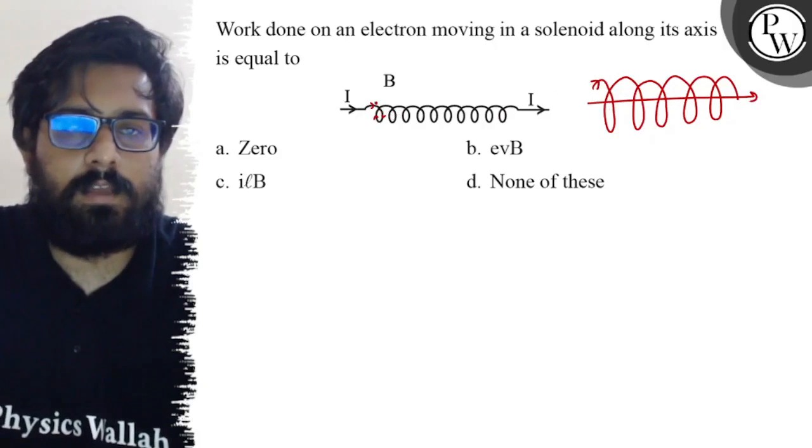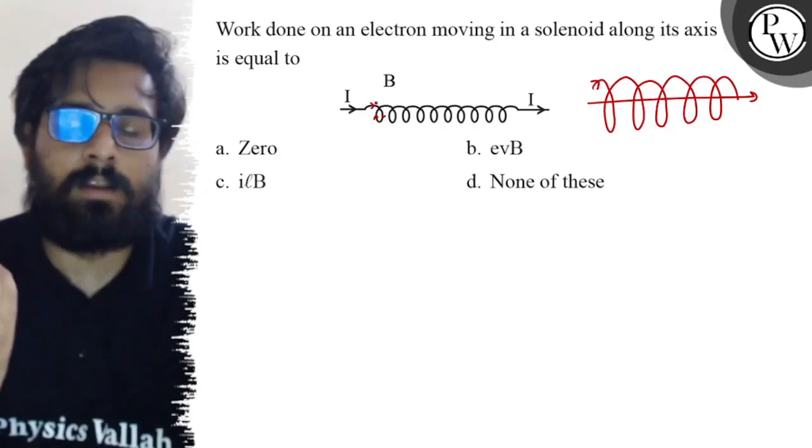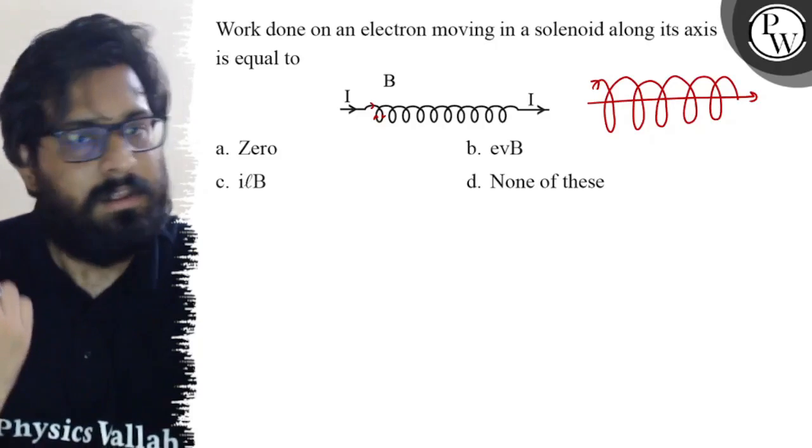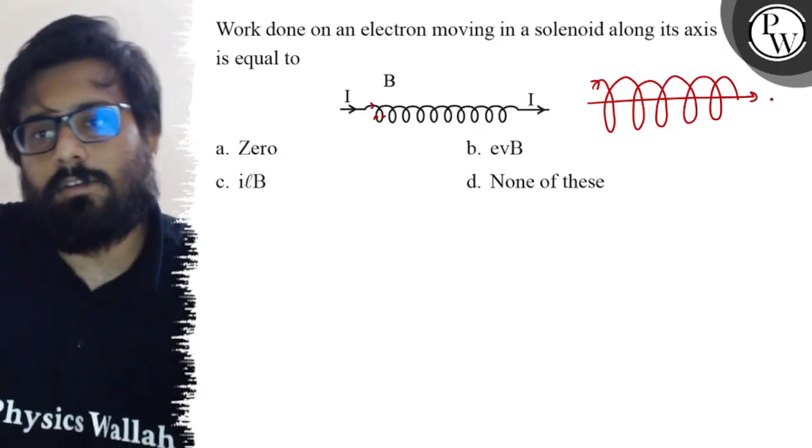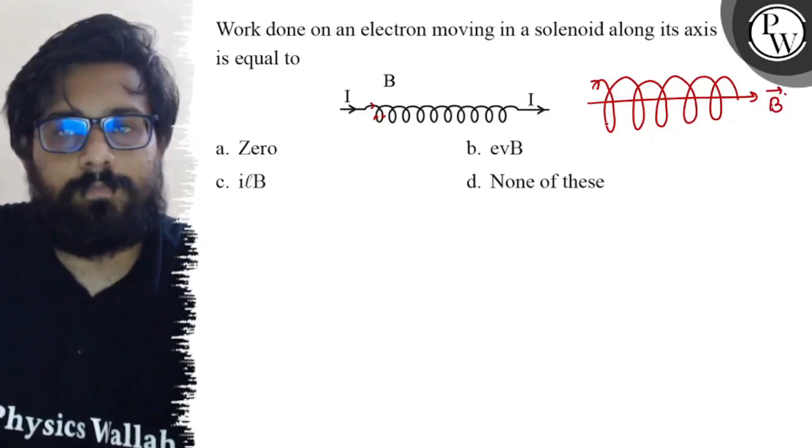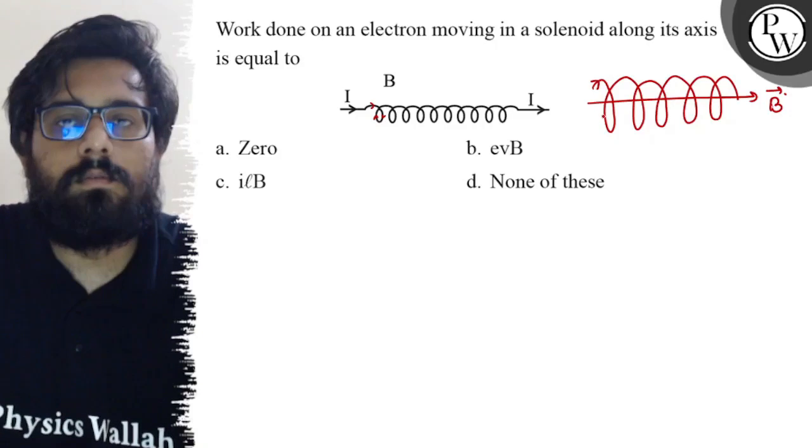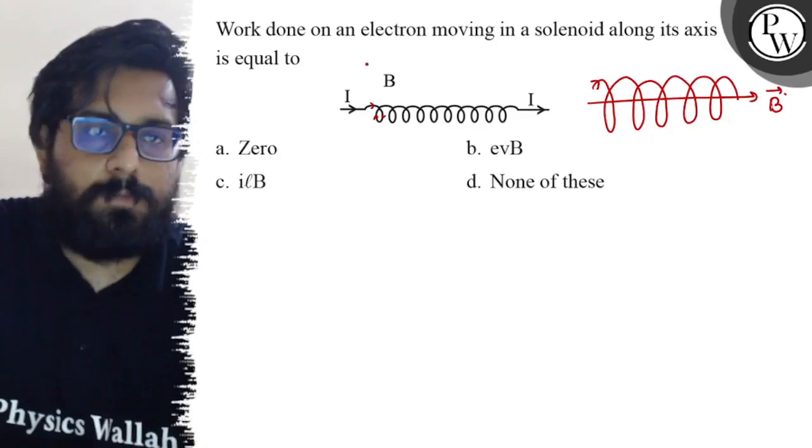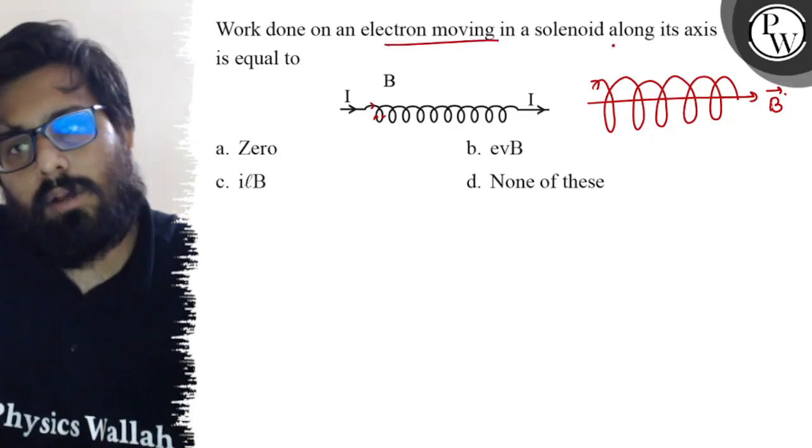So this will be your anti-clockwise direction, right? And if current comes to be anti-clockwise direction, then definitely it will be like this, so this is the direction of B, okay. Now you have an electron moving along its axis, so the force on this electron...